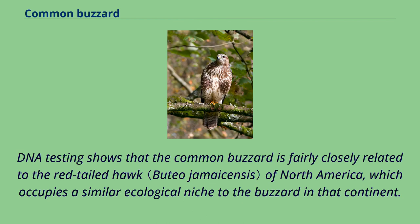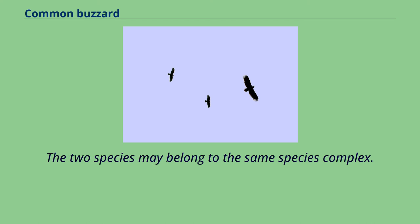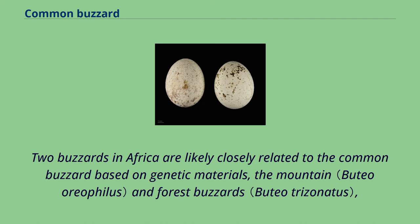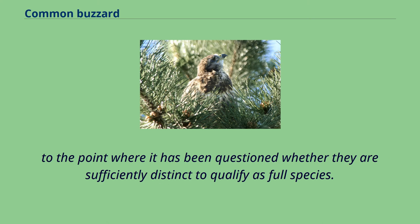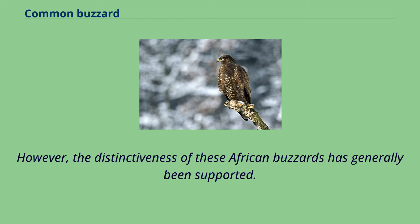DNA testing shows that the common buzzard is fairly closely related to the red-tailed hawk of North America, which occupies a similar ecological niche to the buzzard on that continent. The two species may belong to the same species complex. Two buzzards in Africa — the mountain and forest buzzards — are likely closely related to the common buzzard based on genetic material, to the point where it has been questioned whether they are sufficiently distinct to qualify as full species. However, the distinctiveness of these African buzzards has generally been supported.